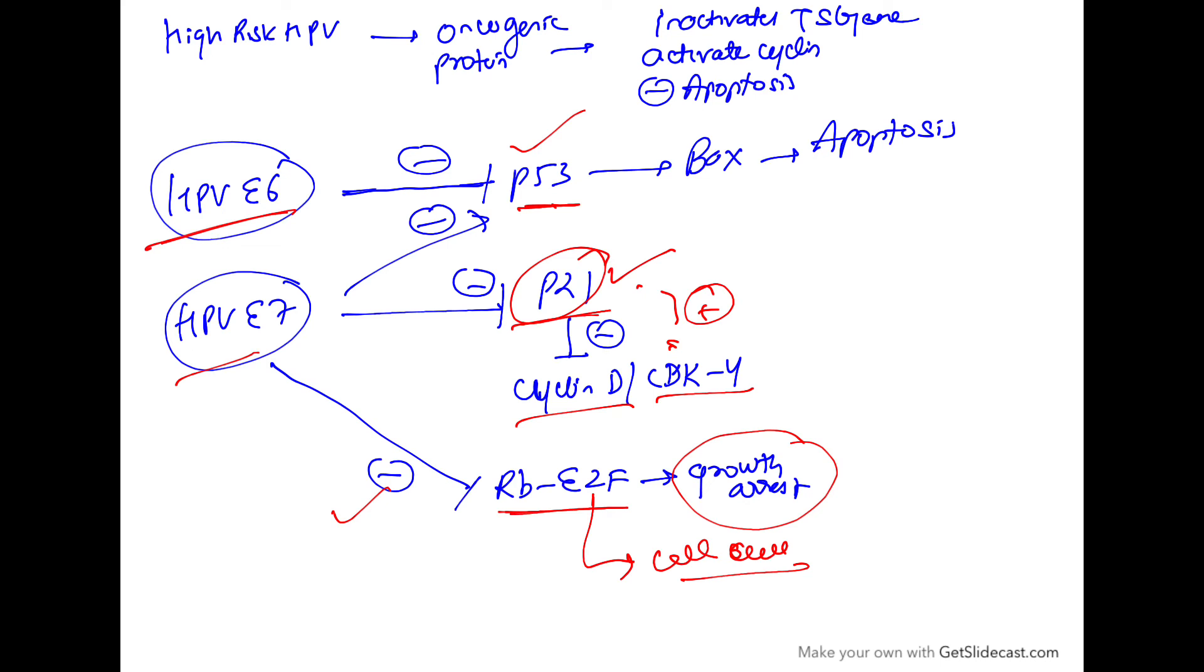We can say that high risk HPV encodes oncogenic proteins which inactivate tumor suppressor genes like p53, activate cyclins like cyclin D and CDK4, and inhibit apoptosis via Bax. It inactivates tumor suppressor genes, so there's no suppression of growth. It activates cyclins, promoting cell cycle growth and inhibiting apoptosis, so no cell death, ultimately leading to tumor progression.